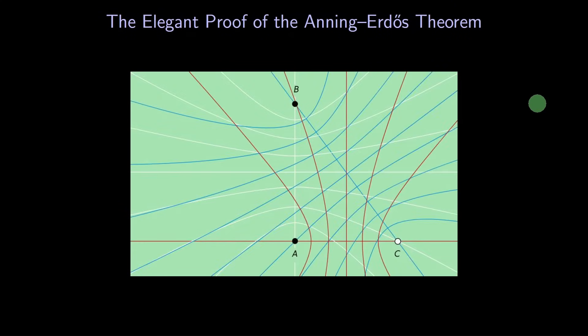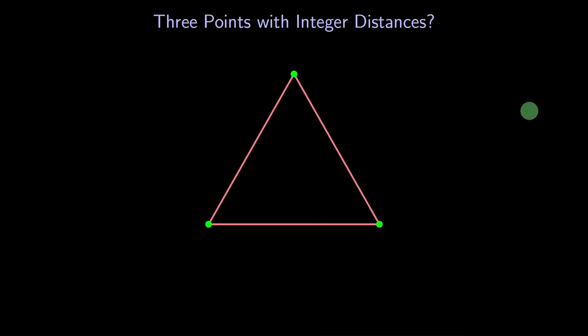We'll start with a small case. Can you find three points so that the distance between each pair is an integer? Sure. For example, each distance could be one unit.